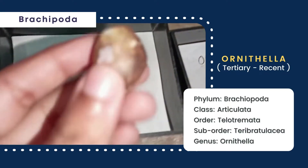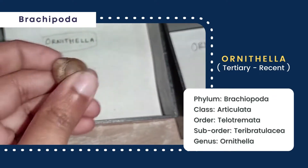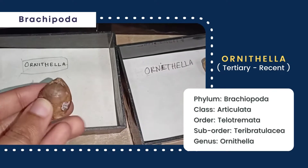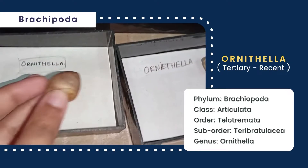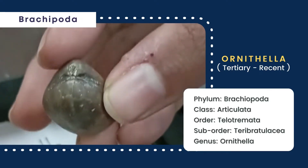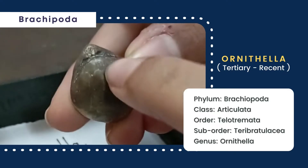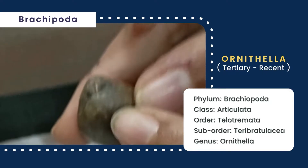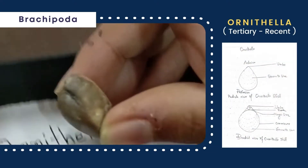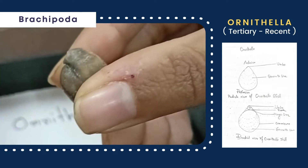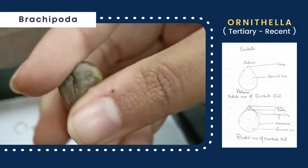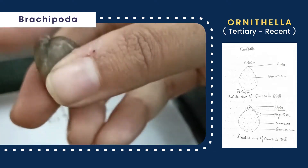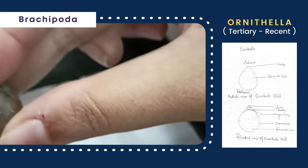This is Ornithella, whose shell is thick, biconvex, and oval in outline. The length of the shell is greater than its width. Valves are equilateral, with the pedicle valve greater in dimension than the brachial valve. The umbo is more prominent on the pedicle valve, producing an adduct beak, and beneath this a large circular foramen is present. The hinge line is much less than its width and is curved, known as the terebratulite type. The exterior surface is smooth but shows few barely visible growth lines.